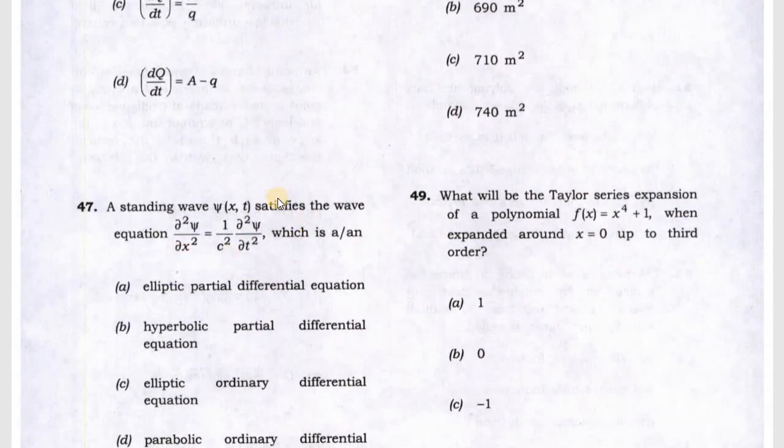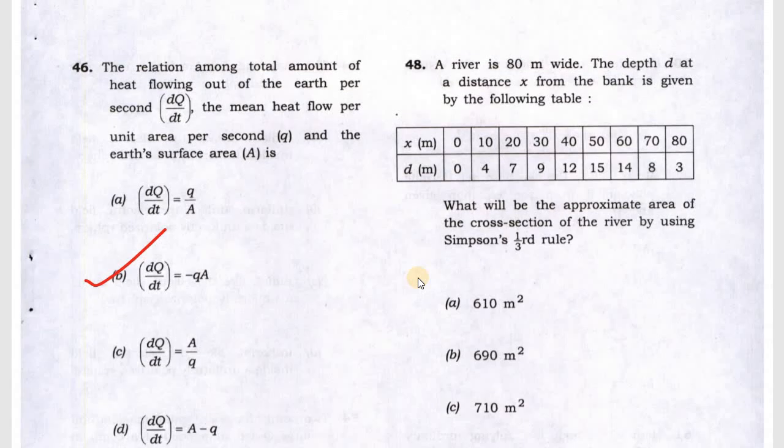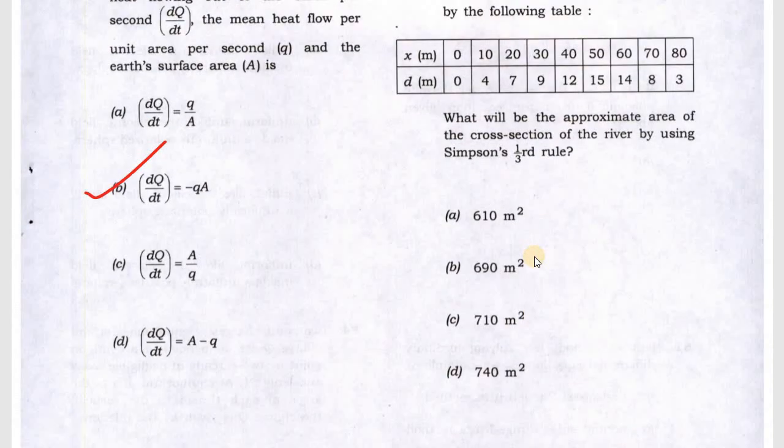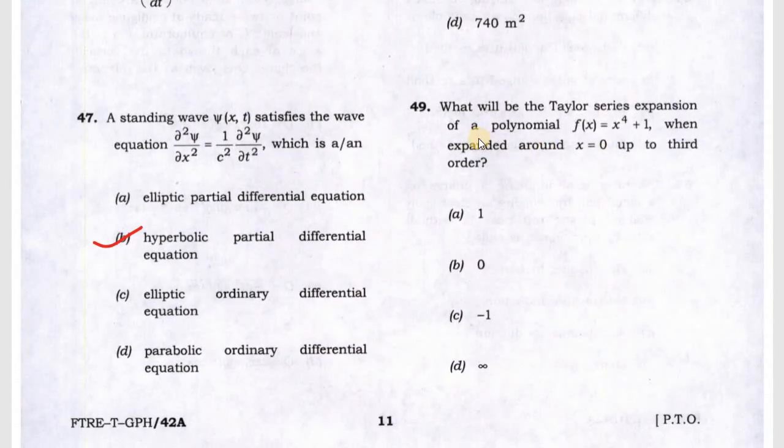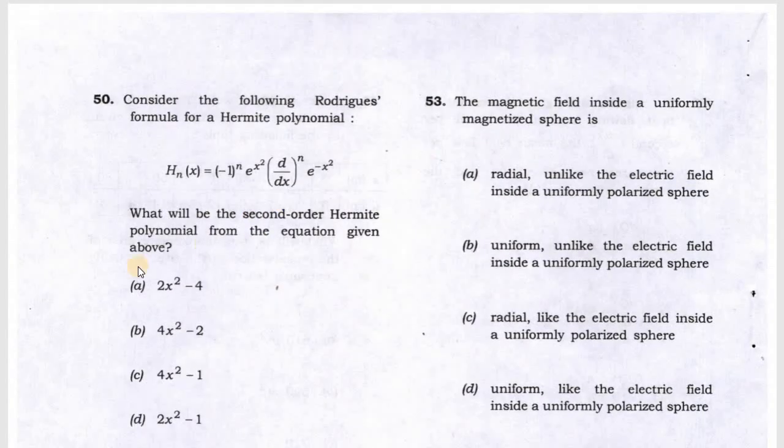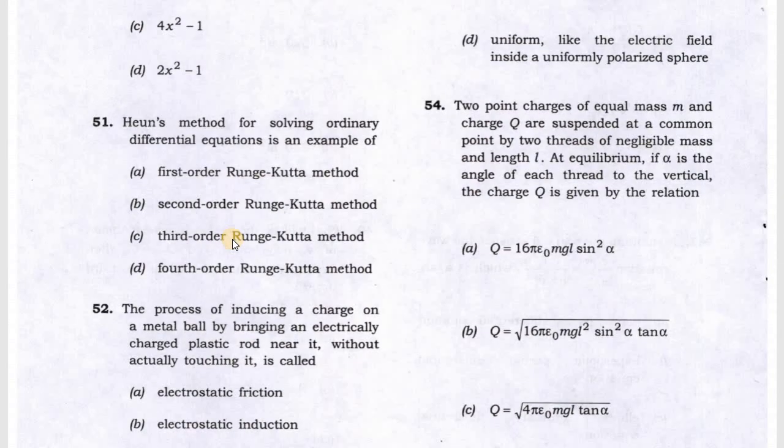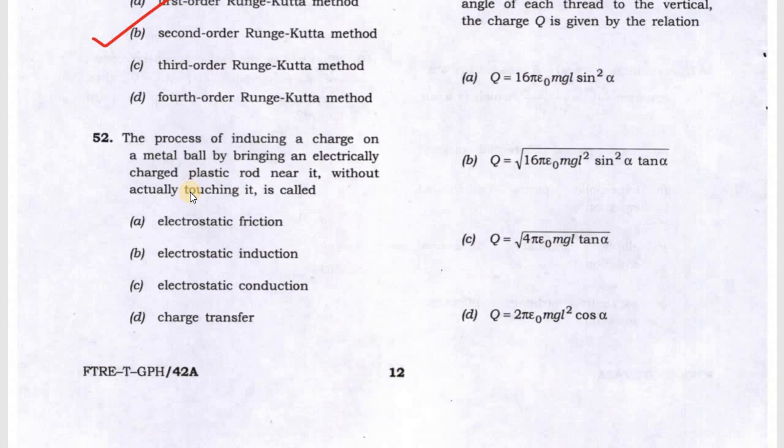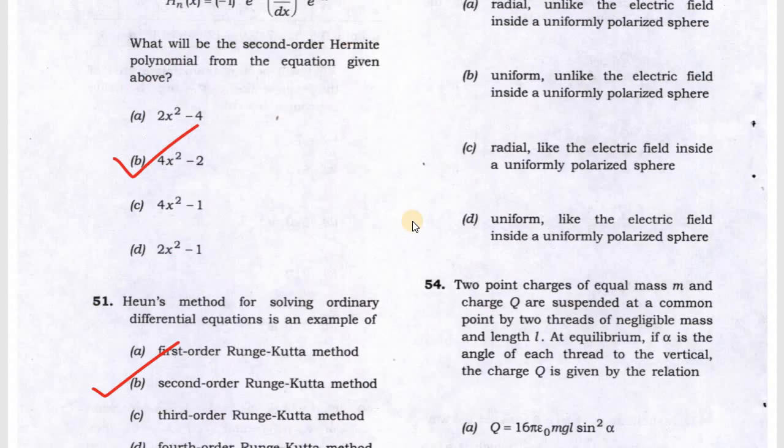Question 43 has two equations given, so the solution is infinite. Question 44 has three vector quantities. Question 45 is a possible solution of the differential equation, answer is B. Question 46 answer is B. Question 47 is a standing wave equation, it's the wave equation partial differential equation. Next is Simpson's one-third rule. It is quite complicated to solve in exam conditions, answer is C. Next is Taylor series expansion. If you put x equal to 0, you will get answer A. Question 50 is Hermite polynomial, derivative will give B. The Holmes method is for solving ordinary differential equations, it is second order RK method. Next is the process of inducing charge, this is electrostatic induction. 52 will be B.